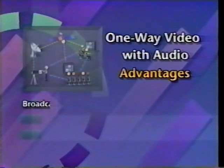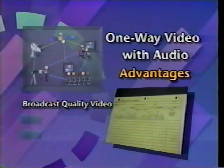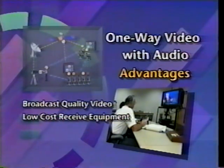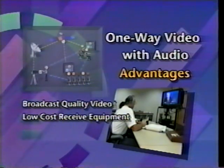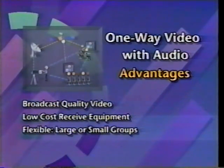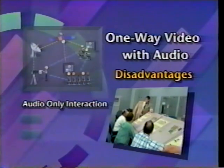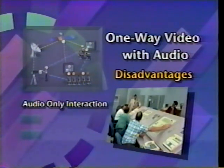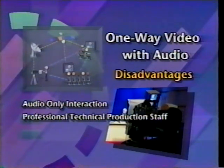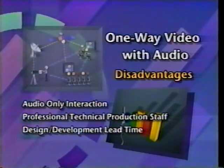One-way video with audio provides a high broadcast-quality video image, which may be extremely important if fine points on equipment or forms need to be shown. Only originating sites require video transmitting equipment and studio production facilities. Received sites need only low-cost receive equipment such as monitors and a telephone-based audio link. The system is flexible — it can be used to broadcast to large groups or provide highly interactive training to small groups. A professional technical staff is needed, and you should plan enough lead time to design course materials for an interactive visual format.